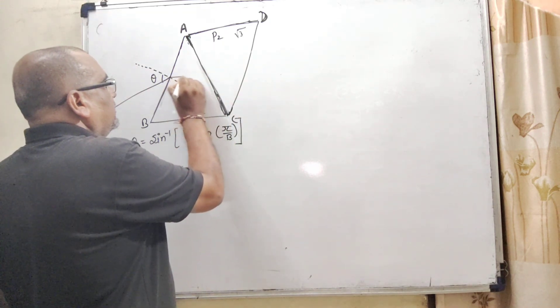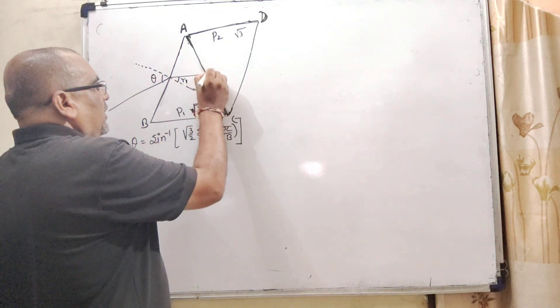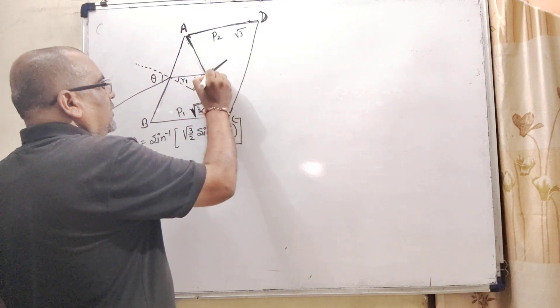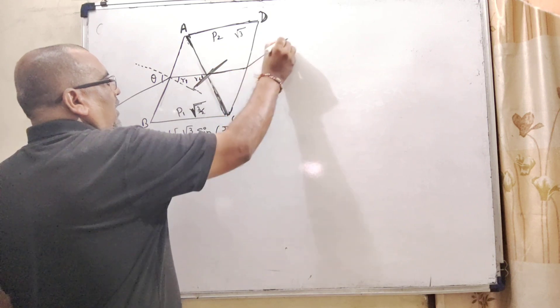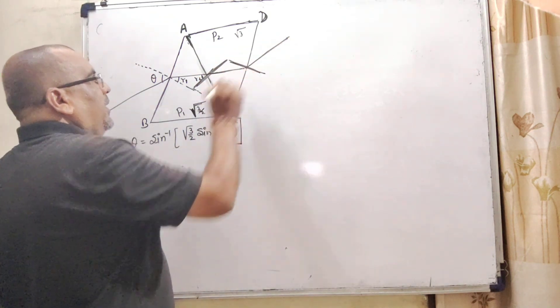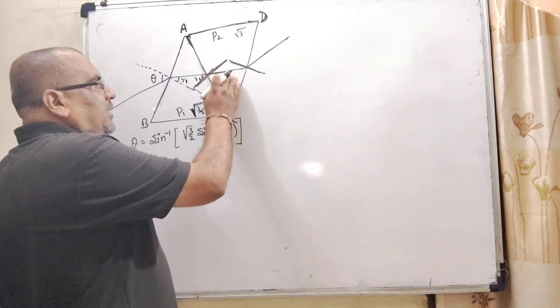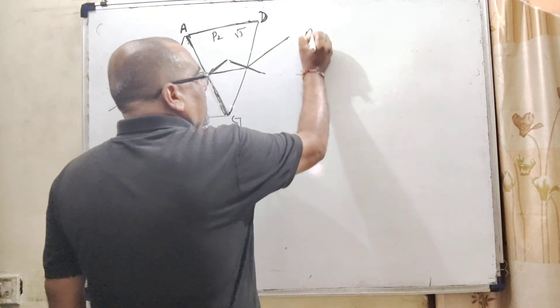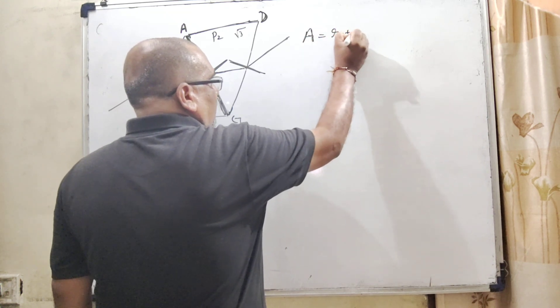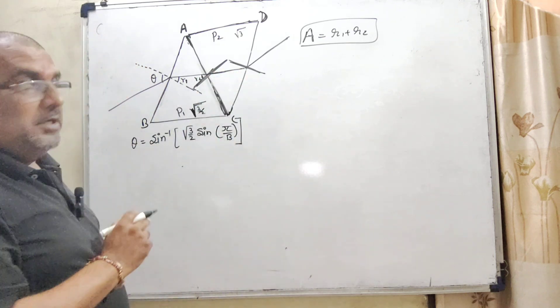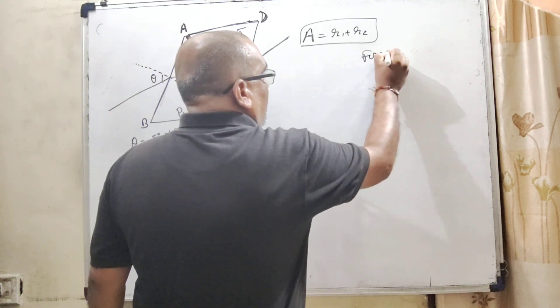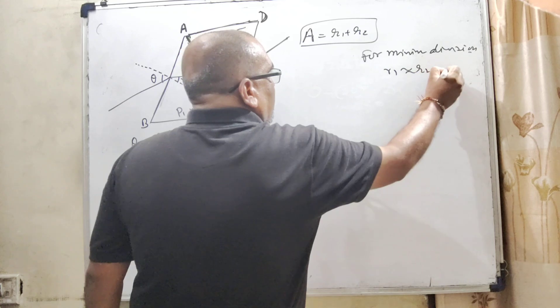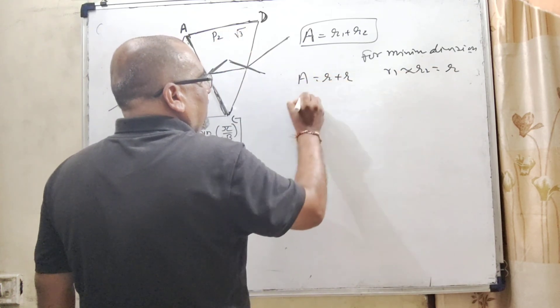Now here this prism shows minimum deviation, very important thing. So here first refraction given the name R1, draw this is perpendicular, this is R2. And here again this shows the refraction and goes to this direction. Very important thing in the given question is that P2 prism shows minimum deviation. What does it mean? As we know that the relation of the refraction through the prism is A equal to R1 plus R2.